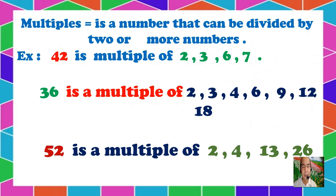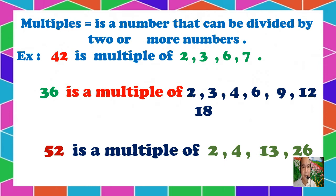We have another number, 36. 36 is a multiple of 2 — it can be divided by 2 exactly without remainder. It is also divisible by 3. It can be divided by 4: 36 divided by 4 gives 9. Still divisible by 6: 36 divided by 6 gives 6. 36 divided by 9 gives 4. 36 divided by 18 gives 2. It is also divisible by 12. So 36 is a multiple of these numbers because this number is divisible by 2 or more numbers.